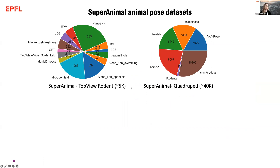The top view is very important for preclinical medicine and behavioral neuroscience. For the side view, animals that are quadrupeds share that characteristic, so we could train these datasets across all different animals — from cheetahs, dogs, horses, cats, sheep — you name it. If it has four legs, we tried to include it in these datasets.